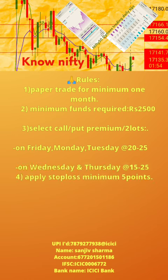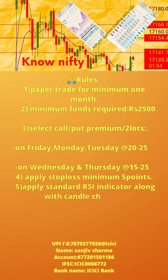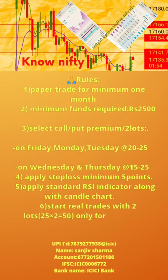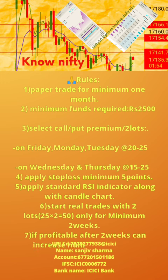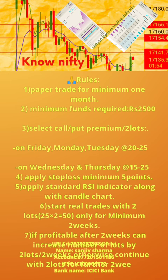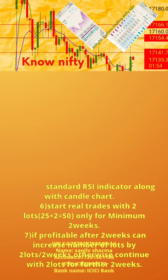4. Apply stop loss of minimum 5 points. 5. Apply standard RSI indicator along with a candle chart. 6. Start real trades with 2 lots, i.e. 25 per lot into 2 equals 50, only for a minimum of 2 weeks. 7. If profitable after 2 weeks, increase the number of lots by 2 lots every 2 weeks; otherwise continue with 2 lots for a further 2 weeks.